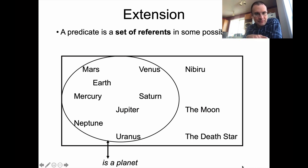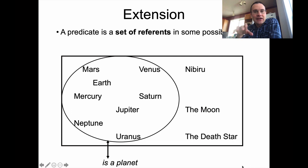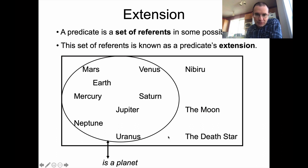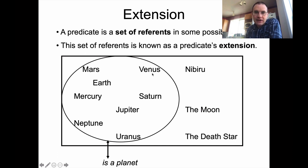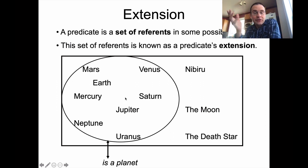To go back to the other setup I was talking about at the beginning of this second half of the lecture: a predicate is a set of referents in some possible world. So in this possible world, we have this set of referents — Mars, Earth, Mercury, Neptune, Uranus, Jupiter, Saturn, Venus — these are all a planet in this particular world. And when I talk about that set of referents, I can refer to it as a predicate's extension.